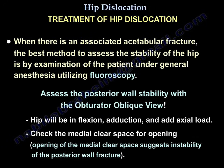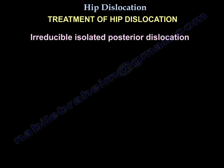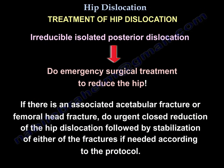When there is an associated acetabular fracture, the best method to assess hip stability is examination under general anesthesia using fluoroscopy. Use the obturator oblique view — the hip will be flexed, abducted, and axial load applied. Check the medial clear space for opening, as opening means hip instability. If there is an irreducible isolated posterior dislocation, perform emergency surgical treatment. If there is an associated acetabular or femoral head fracture, do urgent closed reduction followed by stabilization of the fractures if needed.